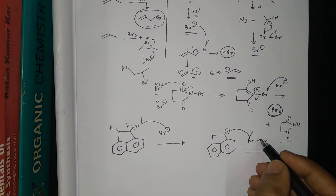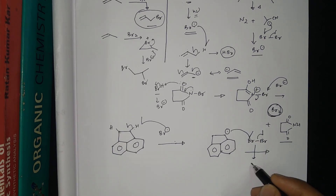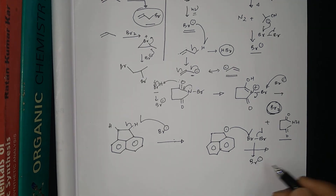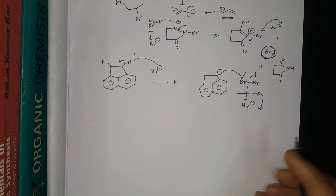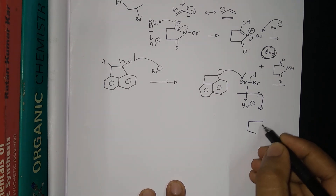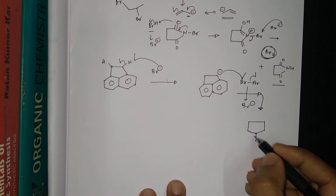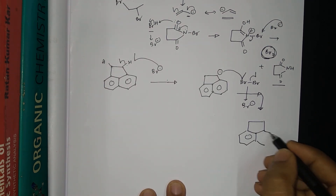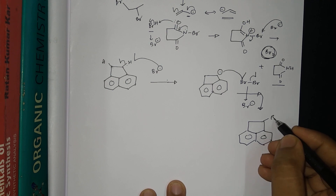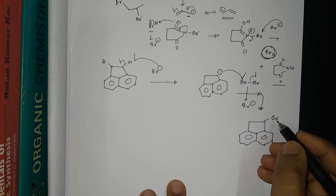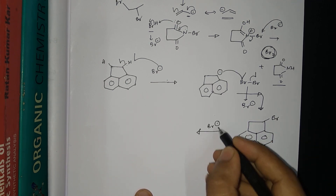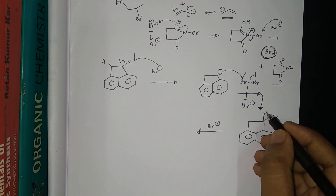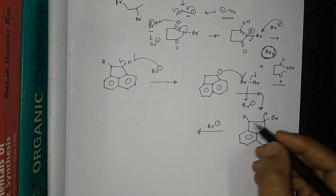One Br• is produced from the Br2 molecule, and bromination happens at the benzylic carbon. This gives the first brominated product at that position.